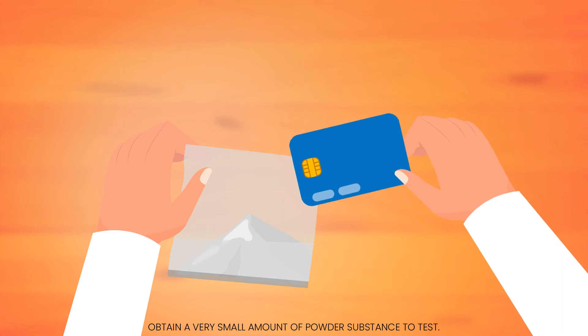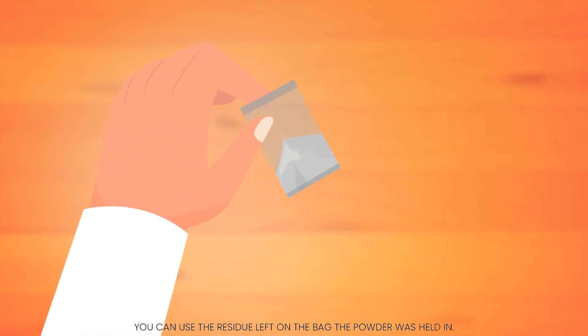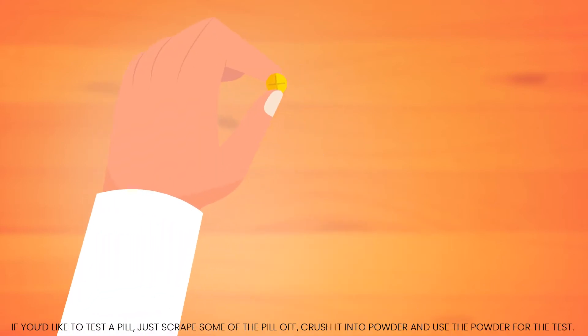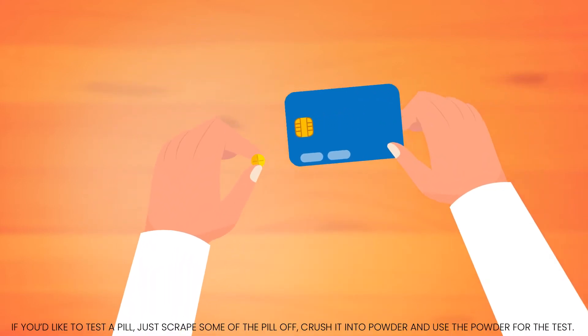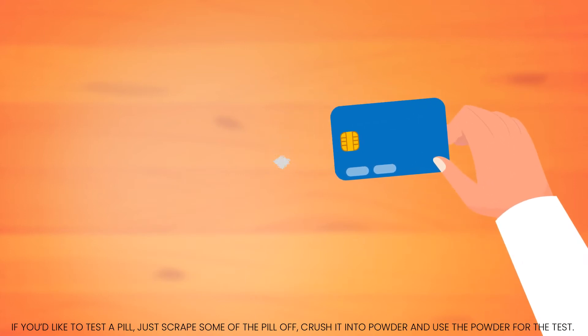Obtain a very small amount of powder substance to test. You can use the residue left on the bag the powder was held in. If you'd like to test a pill, just scrape some of the pill off, crush it into powder, and use the powder for the test.